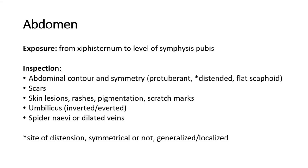Adequate exposure from the xiphisternum of the child to the level of the symphysis pubis. On inspection, look at the abdominal contour and symmetry — the abdomen may be protuberant, distended, or scaphoid in shape. Look for any scars at both front and back, because any renal biopsy scar is at the back. Look for skin lesions, rashes, pigmentation, or scratch marks that could suggest pruritus in chronic liver disease. State whether the umbilicus is inverted or everted and look for spider nevi or dilated veins, which could suggest chronic liver disease.